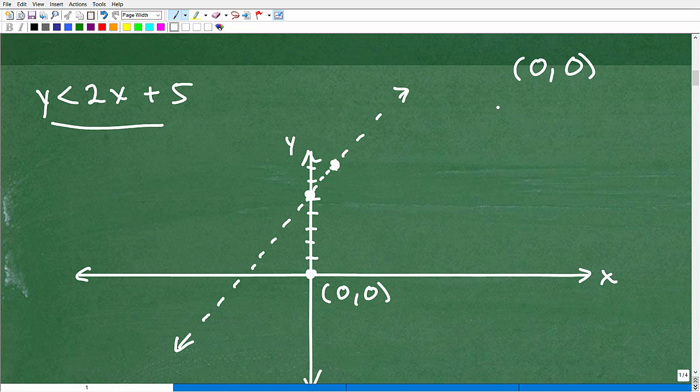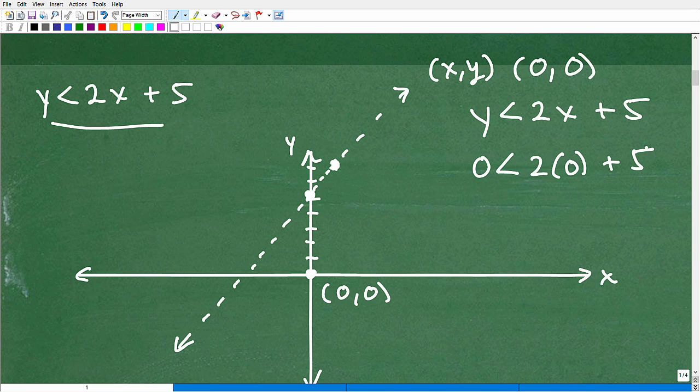Okay, so y is less than, let me do that a little bit better, y is less than 2x plus 5. So remember the 0, 0, this coordinate, it's x and y. So x is 0, y is 0. So I'm going to plug in 0 for y and 0 for x and then I'm going to take a look at the resulting statement. So I'm going to plug in 0 for y and 0 for x. I'm testing this point, 0, 0, and I'm going to look to see what happens. So I get 0 is less than 2 times 0 is 0. 2 times 0 is 0, plus 5 is 5. So I'm left with this statement.